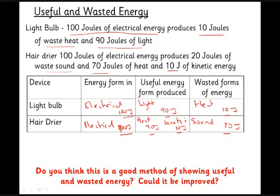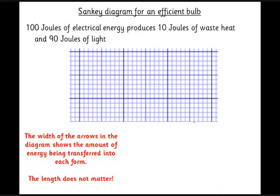What we really would like is some sort of diagram to show us that, and those diagrams are called Sankey diagrams. So it goes like this: 100 joules of electrical energy goes in, and a light bulb in this case, 10 joules of waste heat, 90 joules of light. How do we do this? Well, usually on the exam paper they'll give you some graph paper, and what you need to do is you need to pick a scale.